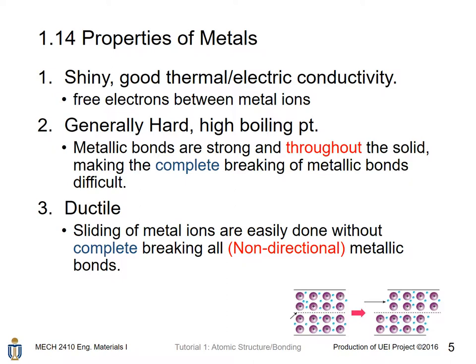Metals are also very ductile because sliding of metal ions is easily done without complete breaking of the non-directional metallic bonds, as shown in this picture. There are still metallic bonds remaining after deformation, which can form between two pieces of metal.